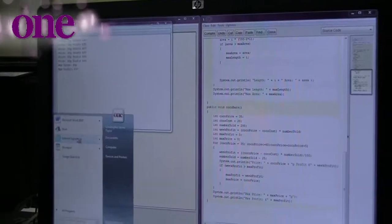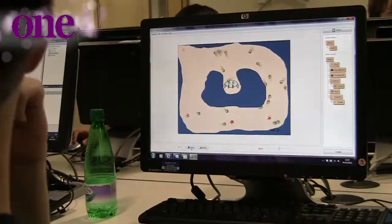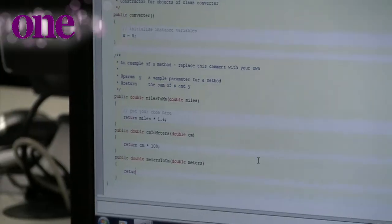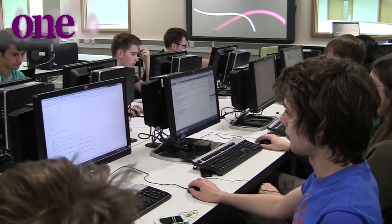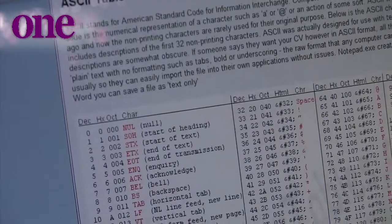In A2, we build upon the computing theory learnt at AS level. You will also complete a coursework project where you will develop an application for a real end user. Past examples students have created include mobile applications for Android and web-based games.